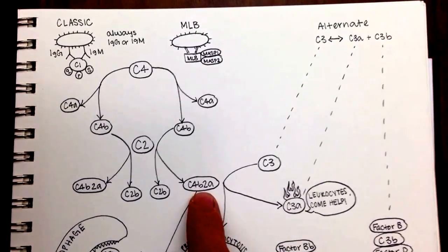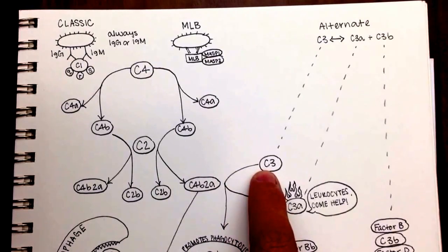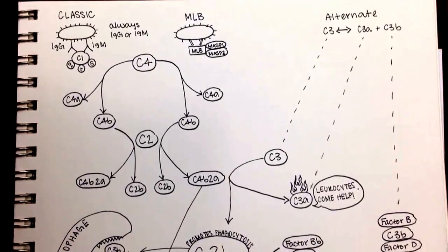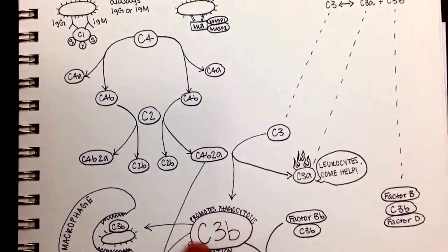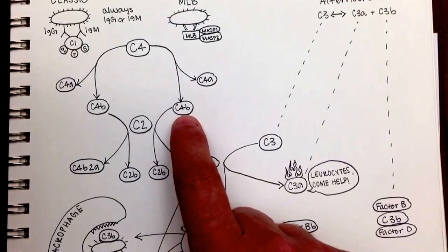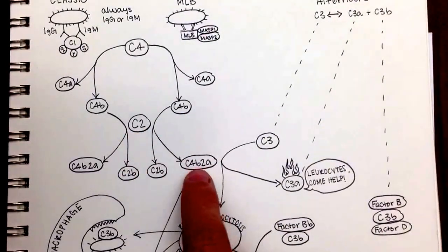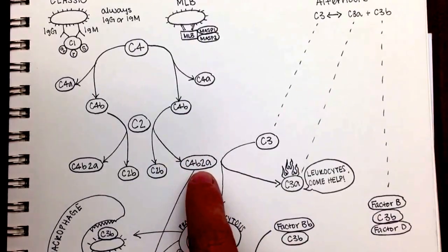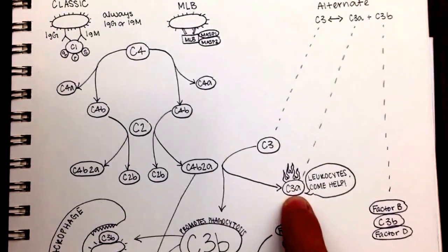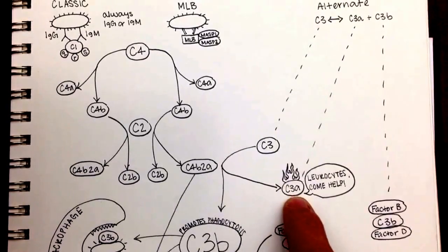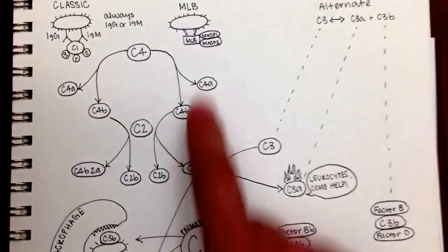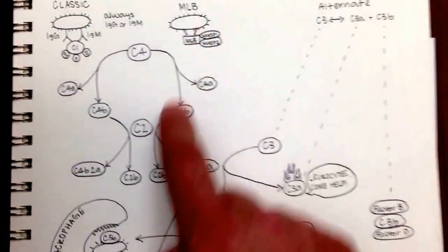Now what is C4b2a good for? Well, it's good for breaking C3 into C3a and C3b. And as we stated earlier, C3b is one of our goals. So we're here at C3b and we found how to get there from either of these. We go from C4, it breaks into two pieces. We keep C4b, it breaks C2. We're going to keep the C2a and combine it with the C4b. And then that broke our C3 into C3a and C3b. Now C3a actually has a function. It functions with inflammation and cause leukocytes. So you can see leukocytes come help. It tells leukocytes to come over. So this was the classical pathway. This was the lectin pathway or the mannose-lectin binding pathway.